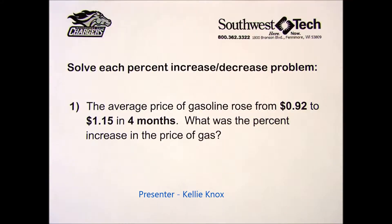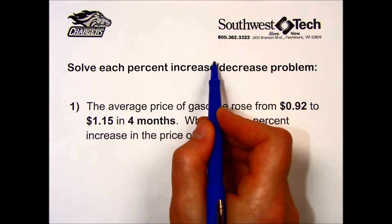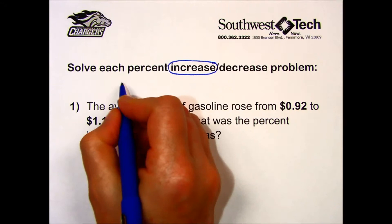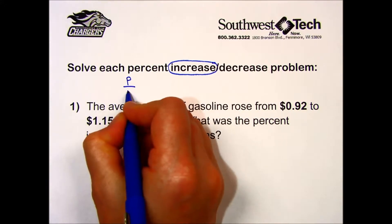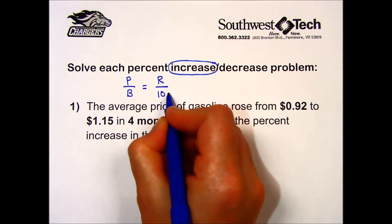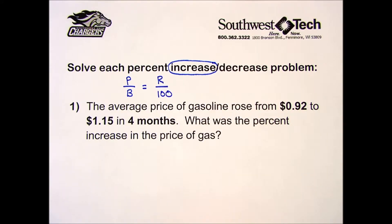Practice set 3-6 involves percent increase and decrease problems. Let's solve two of them together that involve a percent increase. We will be using the formula part over base equals rate over 100, and it's important that we are able to identify these three components correctly.